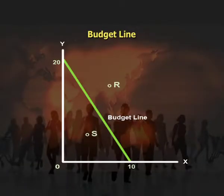A consumer trying to maximize satisfaction would like to reach the highest possible indifference curve, but faces two constraints: first, he must pay a given price for goods; second, he has a limited money income or budget. Under these constraints, how much of each good he buys and how much satisfaction he achieves depends on his choice of quantities of goods X and Y. Therefore, drawing a budget line to represent prices of two goods and money income alongside the indifference curve is very important.